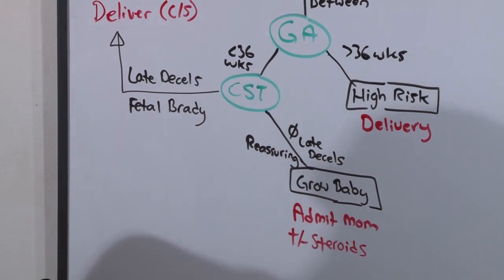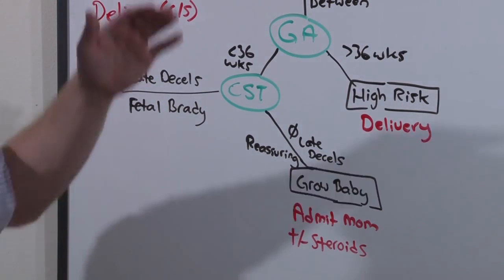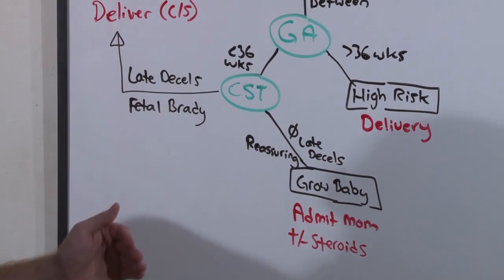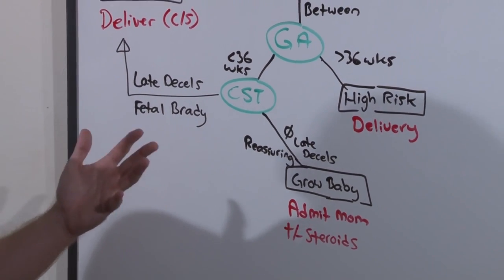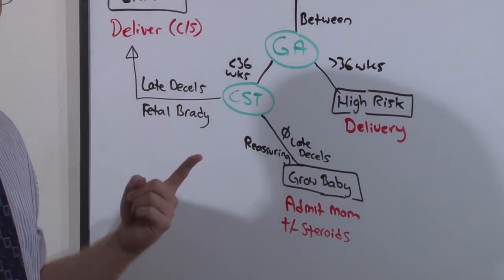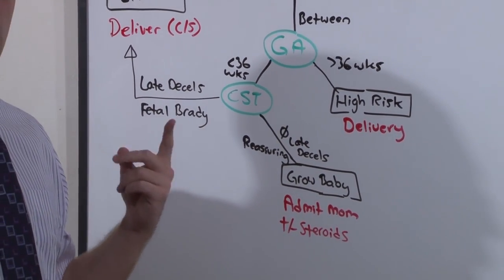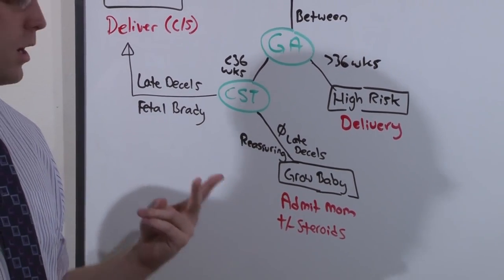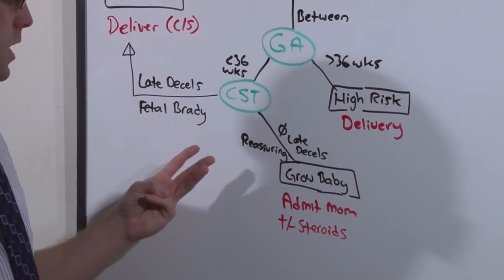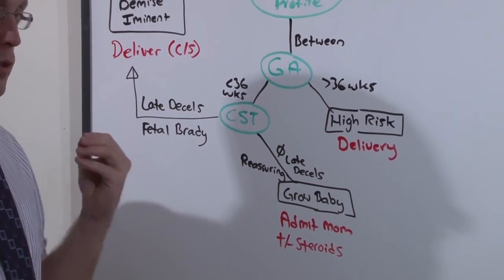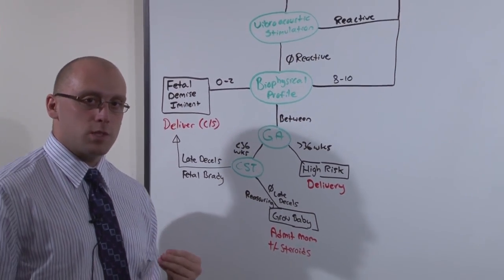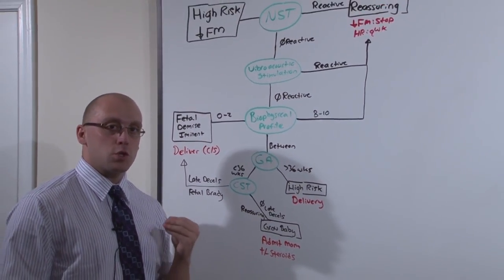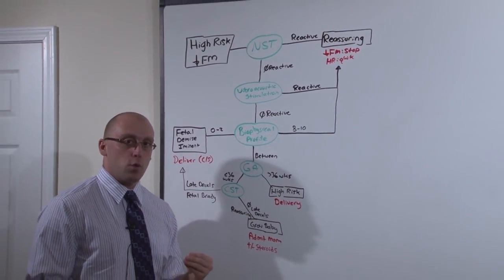This is the decision tree. The three tests we're talking about are the non-stress test, the biophysical profile, and the CST. Let's learn more about those individual tests and what you're supposed to look for.